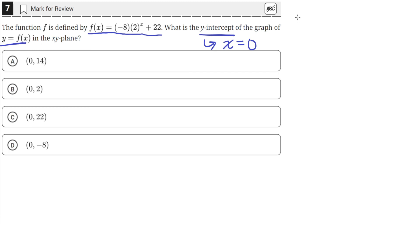So we'll just find the value of f(0). We'll just plug in 0 for x. So we have negative 8 times 2, which is in parentheses since we're raising it to the 0th power, plus 22.